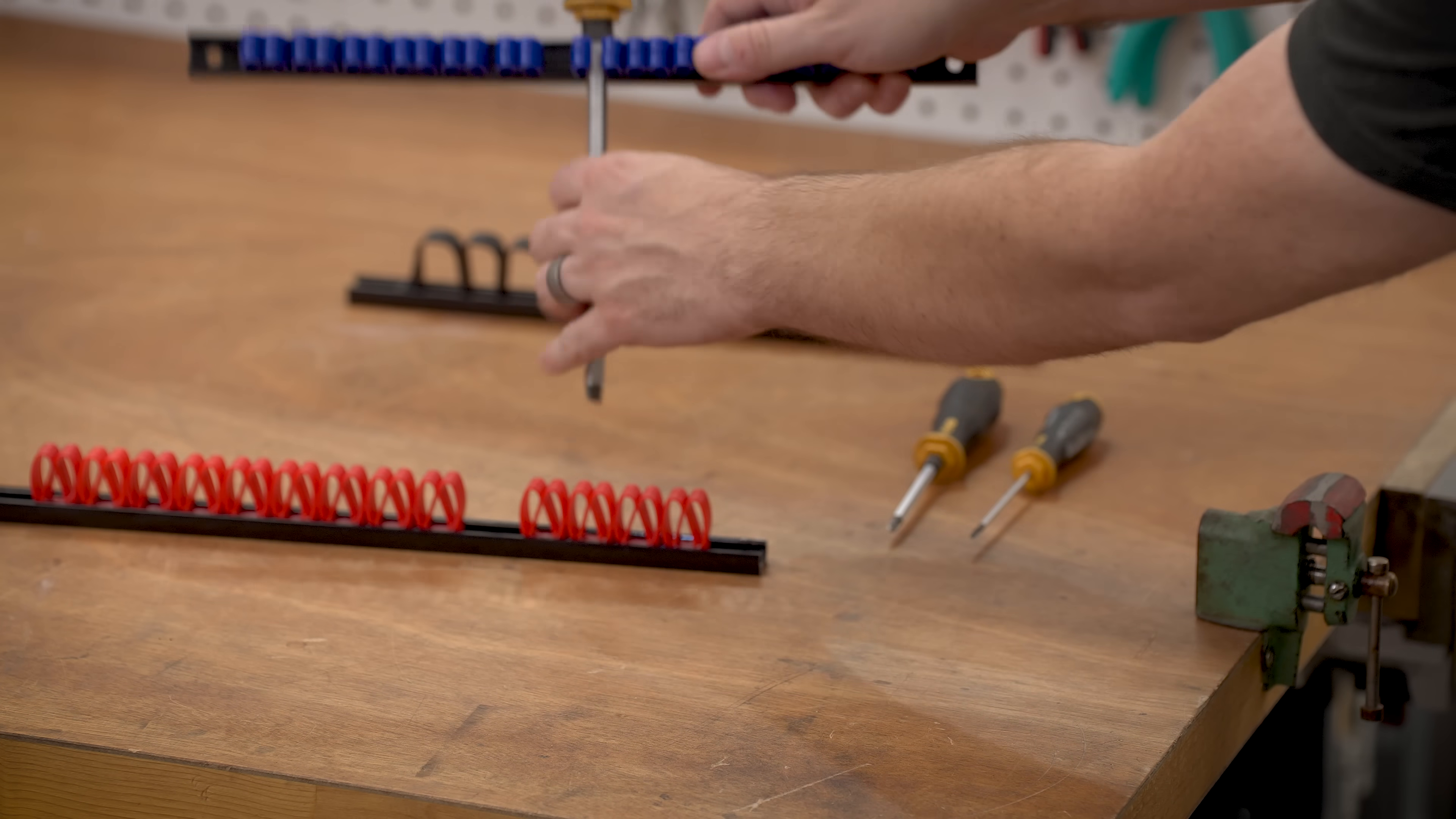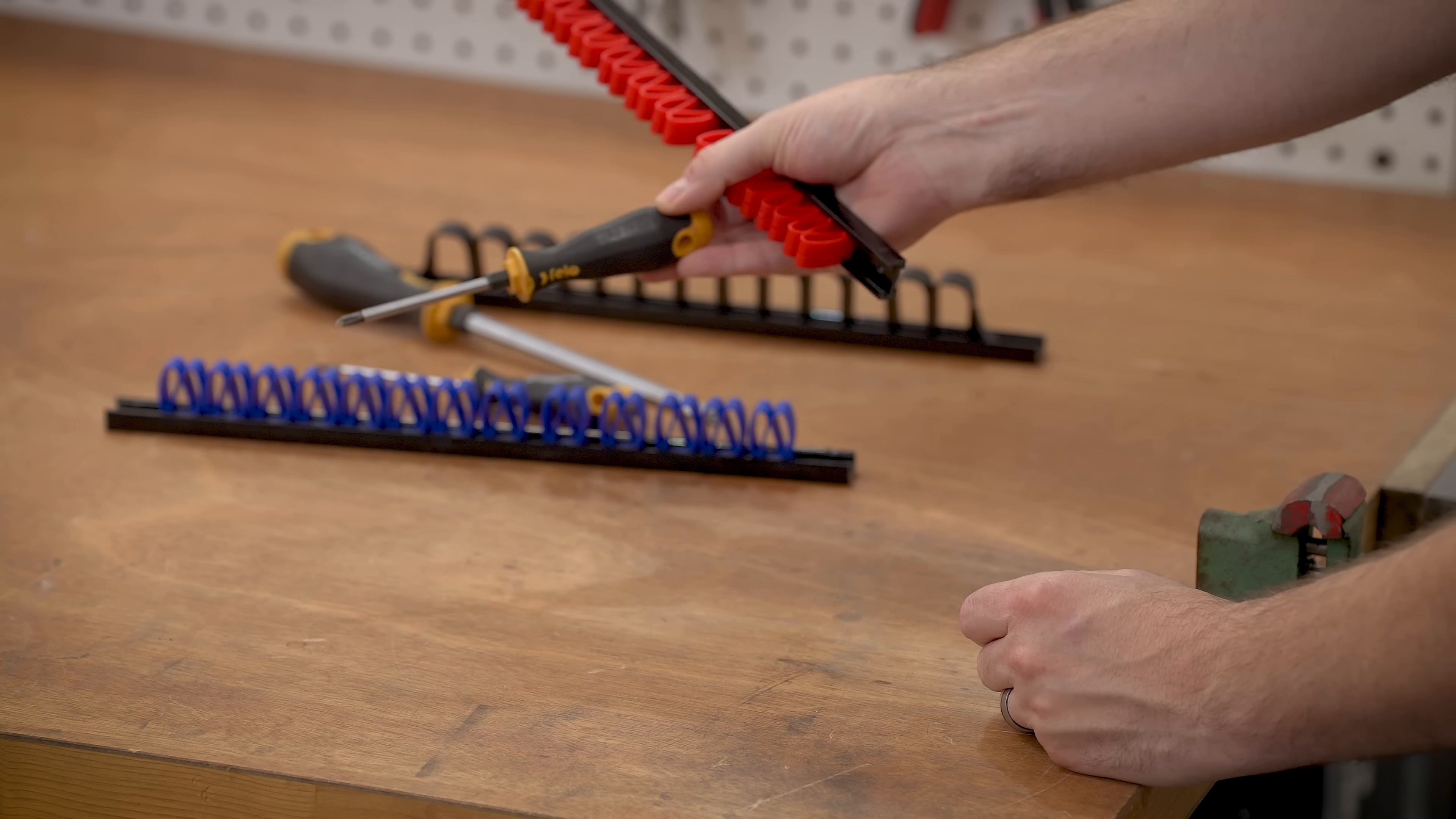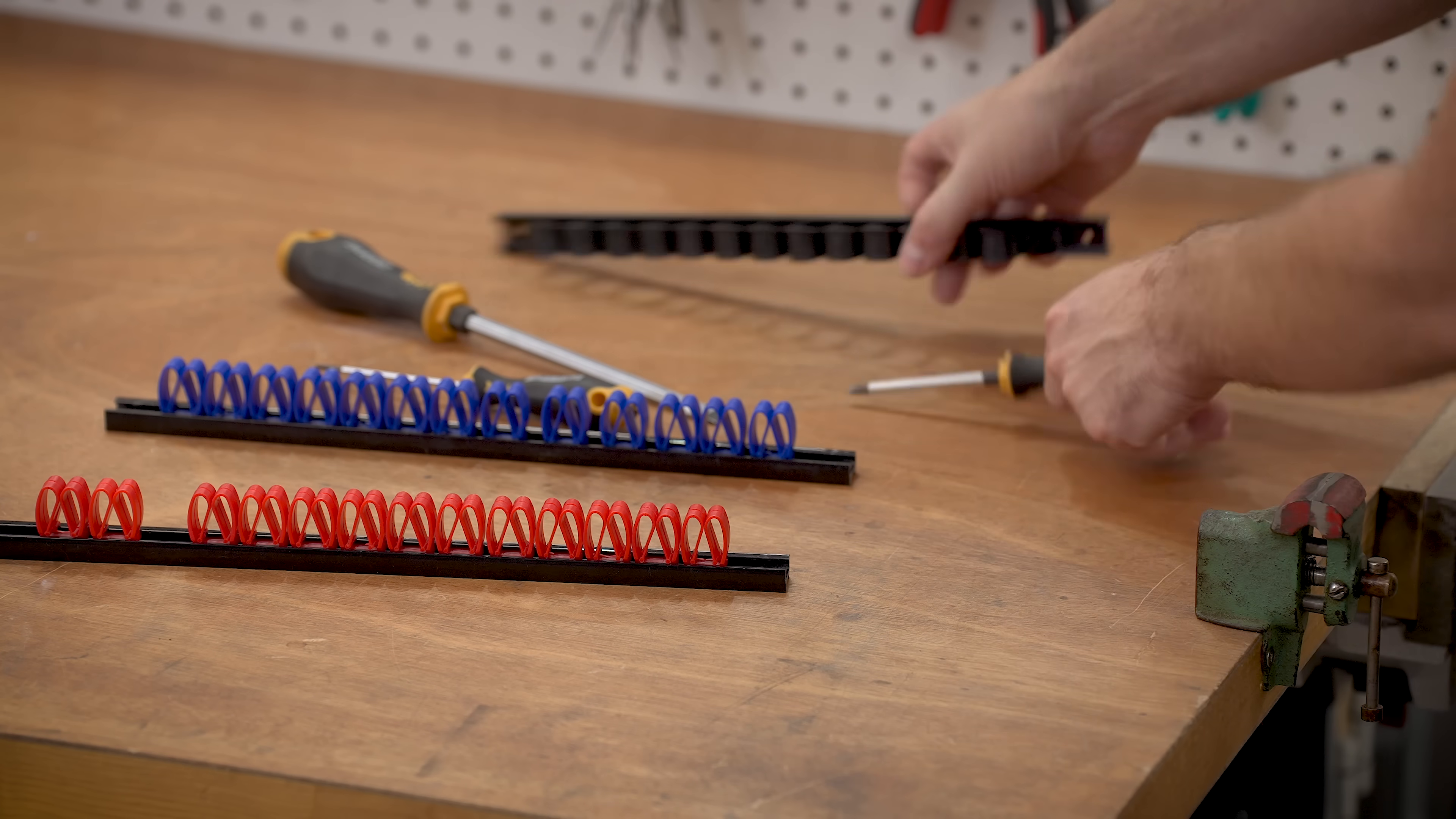But the smaller ones also work okay but then when you start getting into the smaller screwdrivers this is the smallest one right here. It snaps in fine but it doesn't really hold it because this gap is actually quite large. It holds it okay but not great and it's also kind of difficult to find which one is a space in between and which one is the actual clip and then all of these things kind of slide around.